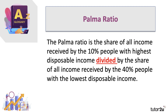The Palmer Ratio came into being about 10 years ago. Two economists, Cobham and Sumner, proposed an alternative to the Gini coefficient, and they named it after José Gabriel Palmer, who was a Chilean economist.